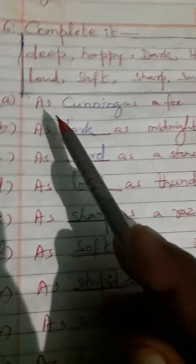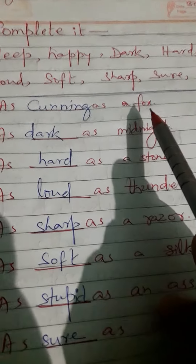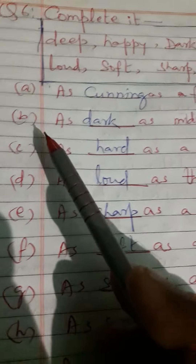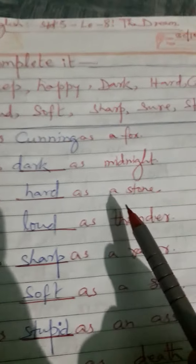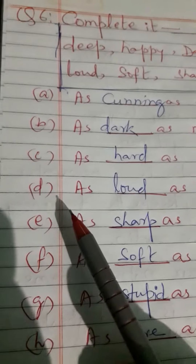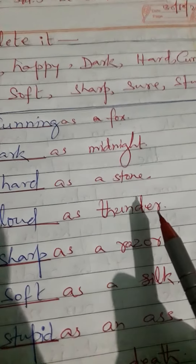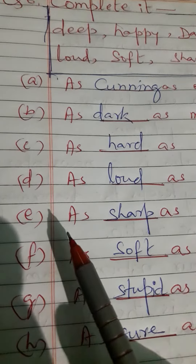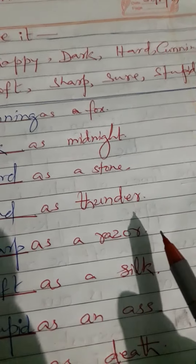A: As cunning as a fox. B: As dark as midnight. C: As hard as a stone. D: As loud as thunder. E: As sharp as a razor.